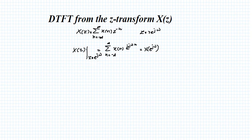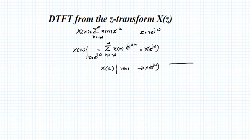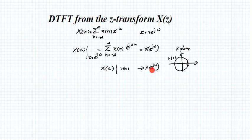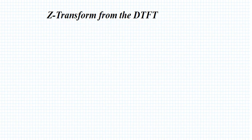In other words, if you evaluate X(z) on a unit circle — meaning if you choose r equal to 1, i.e., modulus of r equals 1 — that is known as X(e raised to j omega). In the z-plane, if there is a circle with radius 1, modulus of r equals 1, and if you evaluate X(z) on that unit circle, you will get X(e raised to j omega). You need to substitute z equal to e raised to j omega, where z equals r times e raised to j omega with r equal to 1, and you will get the DTFT.